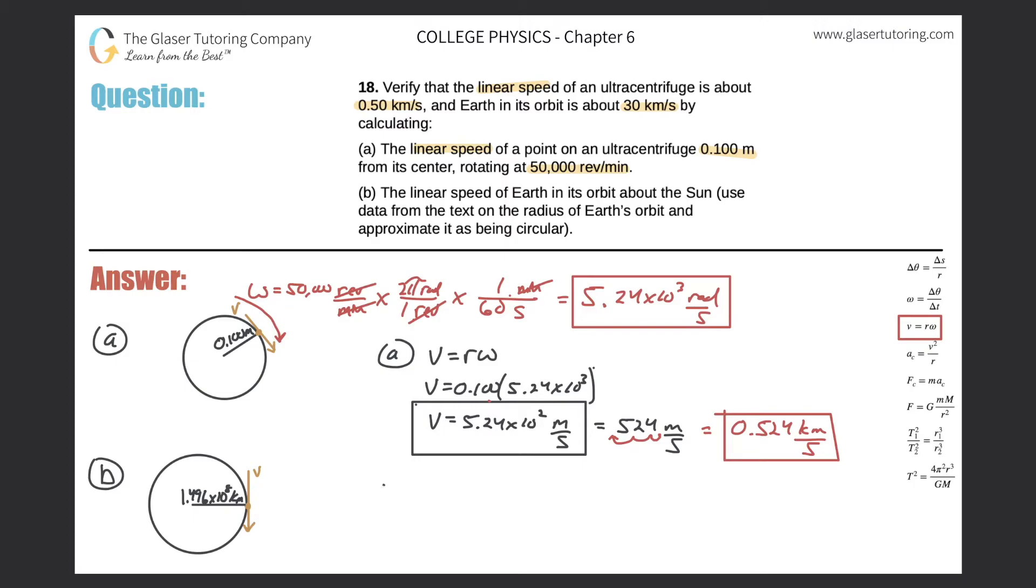So now let's take a look at letter B. Letter B is talking about the linear speed of Earth in its orbit around the Sun. Use the data from the text. So here is Earth. The Sun is right here at the center. And this number comes right from the text: 1.496 times 10 to the 8 kilometers. That is the radius of Earth's orbit around the Sun.